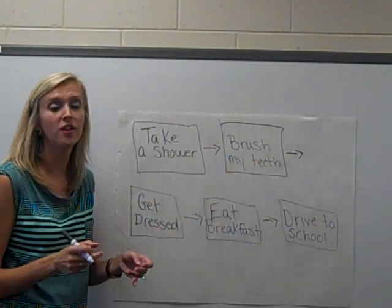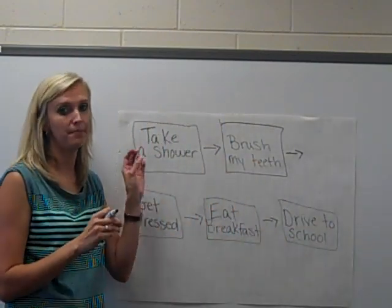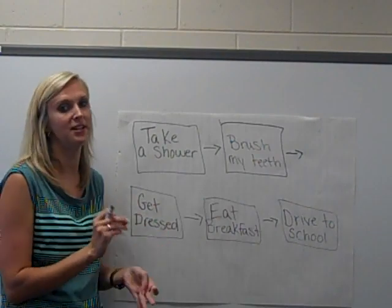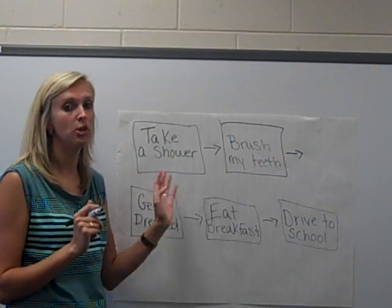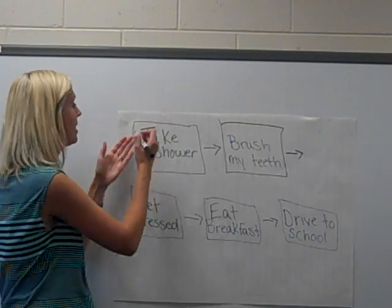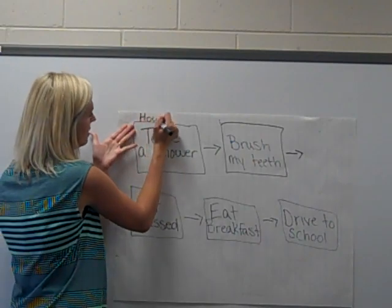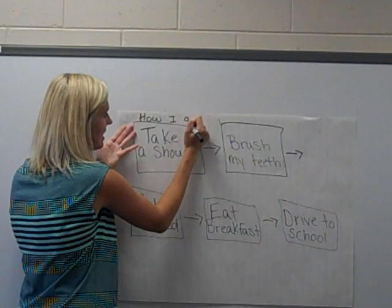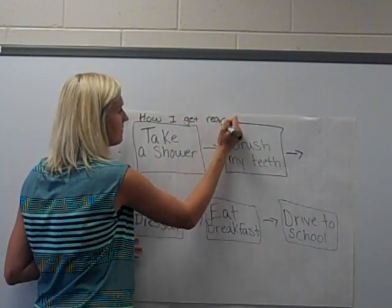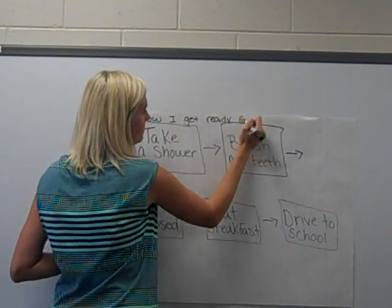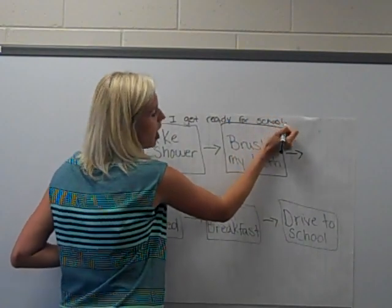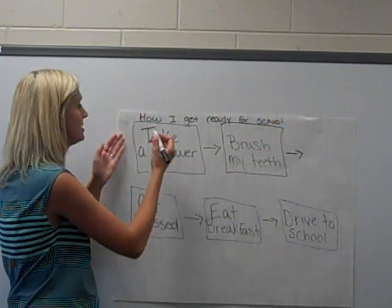Now the most important thing about a flow map is that it needs to have a title. It's the only map that absolutely must have a title, so I know what you are sequencing. So at the top of my flow map I would write 'How I Get Ready for School.' That way, I will always know what you are trying to sequence.